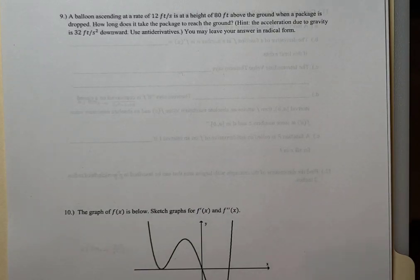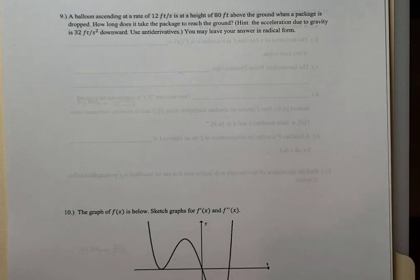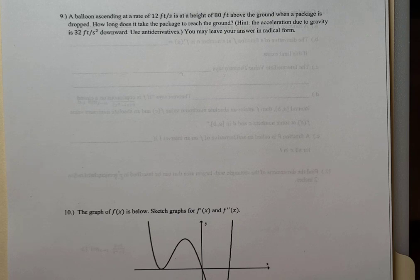We are going to continue the UCMath2A sample file number one. We are on number nine. This one says: a balloon ascending at a rate of 12 feet per second is at a height of 80 feet above the ground when a package is dropped. How long does it take the package to reach the ground? The acceleration due to gravity is 32 feet per second squared.